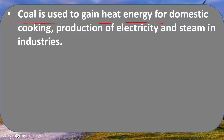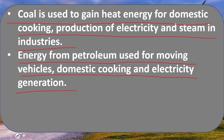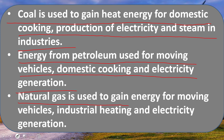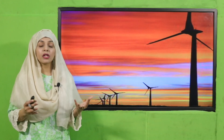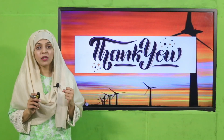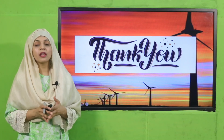In today's lecture we have studied that coal is used to gain heat energy for domestic cooking, production of electricity, and steam in industries. Energy from petroleum is used for moving vehicles, domestic cooking, and electricity generation. Natural gas is used to gain energy for moving vehicles, industrial heating, and electricity generation. I hope you have enjoyed today's lecture. Keep everybody around you safe. Have a good day, thank you so much.